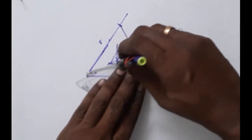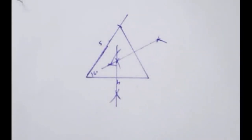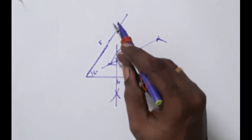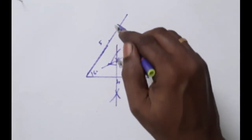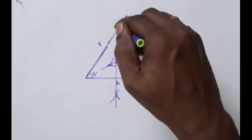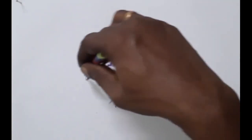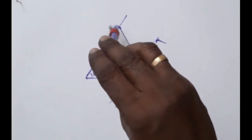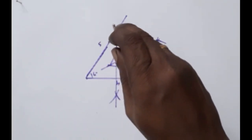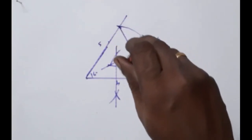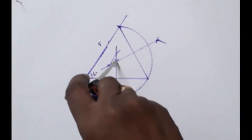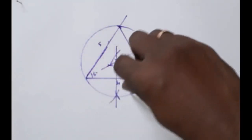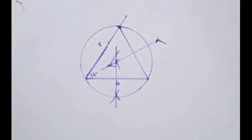Here it is happening. One intersection is the intersecting point, and the intersecting point will combine with the vertex C. With the steps, let it reach all three vertices. Here we go. I will complete the circle.